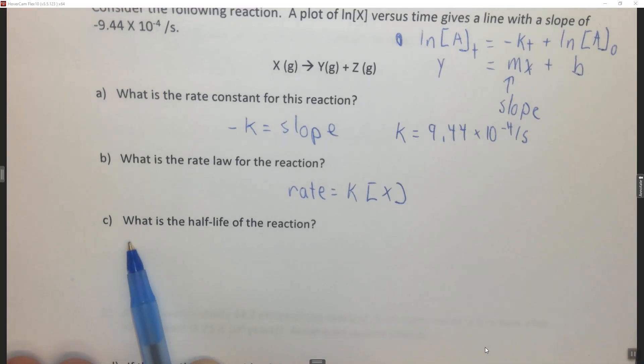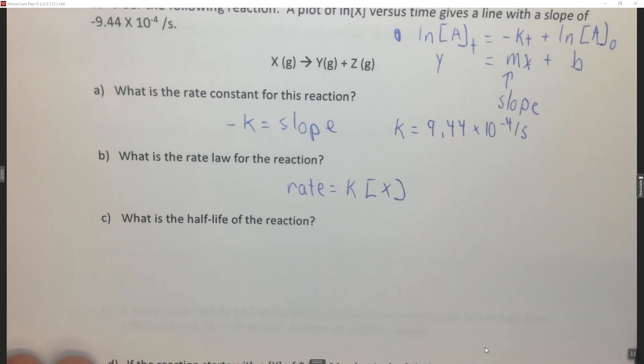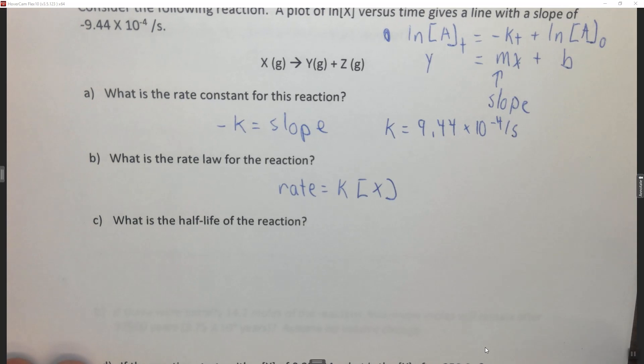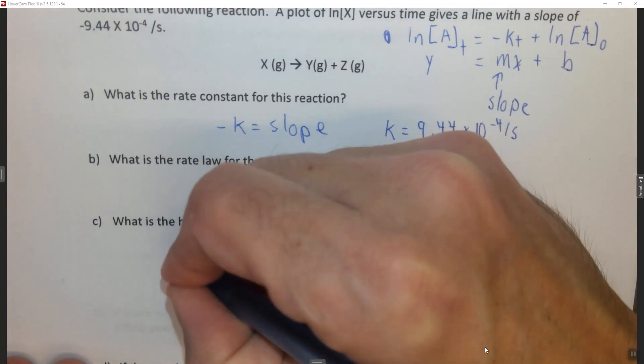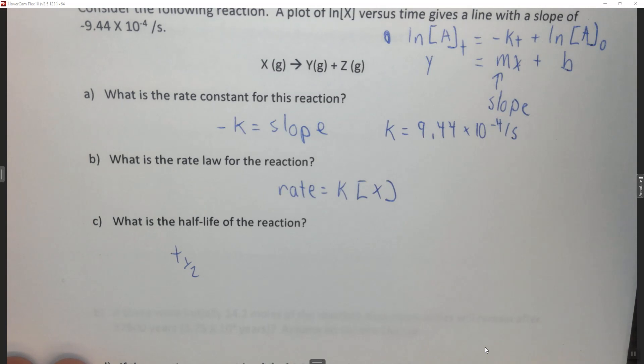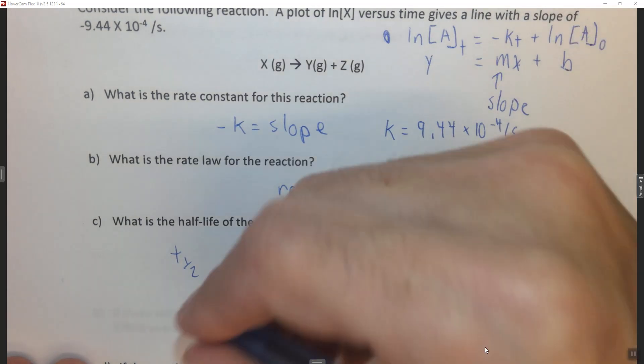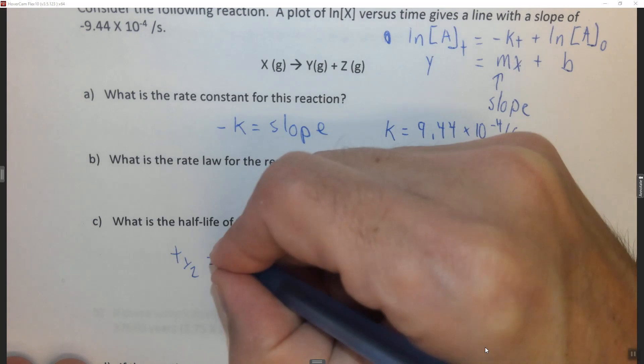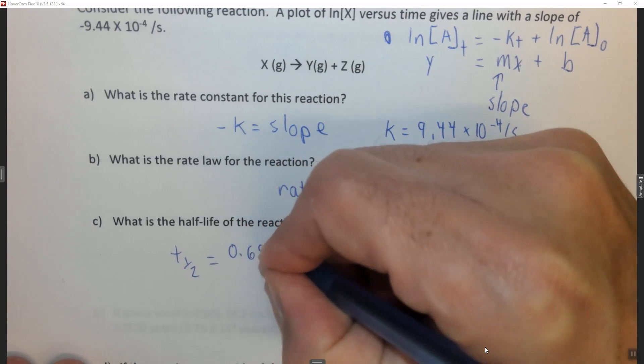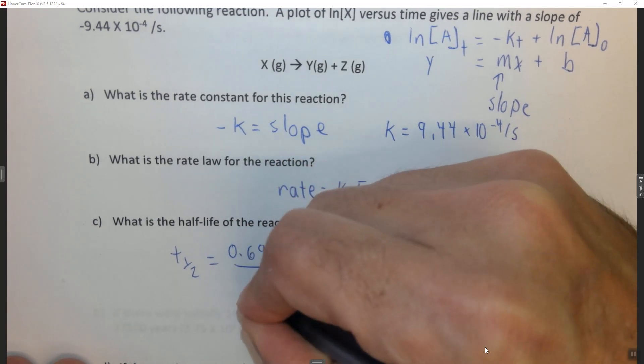Finally for this part of the video, it says what is the half-life of this reaction? Well for a first-order reaction the half-life is constant independent of the concentration. For the half-life of first-order reactions, the t one-half is equal to 0.693 over k.